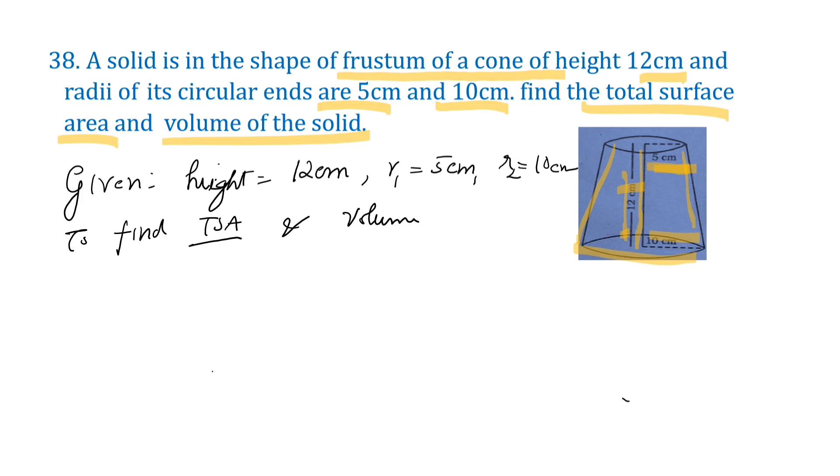Now let us find the total surface area. Here, TSA formula is π(r1 + r2)L, which we don't know - we have to find it, plus πr1² + πr2².